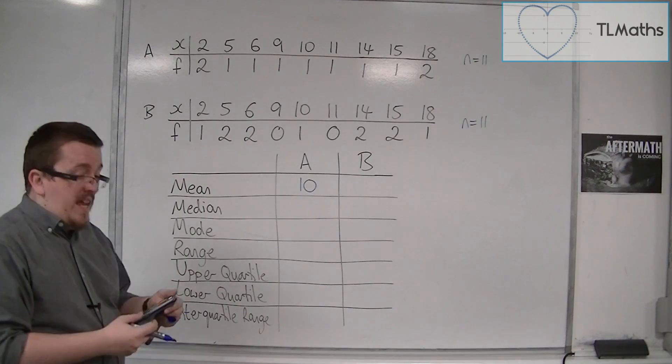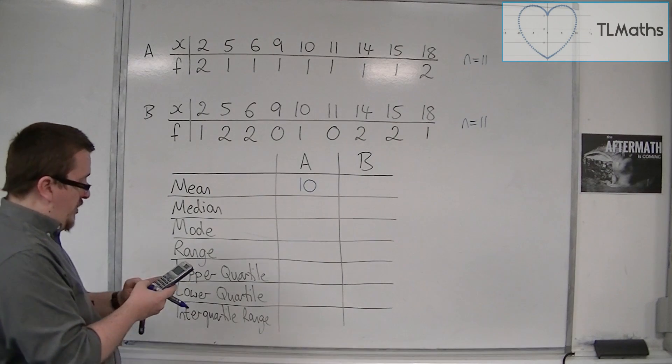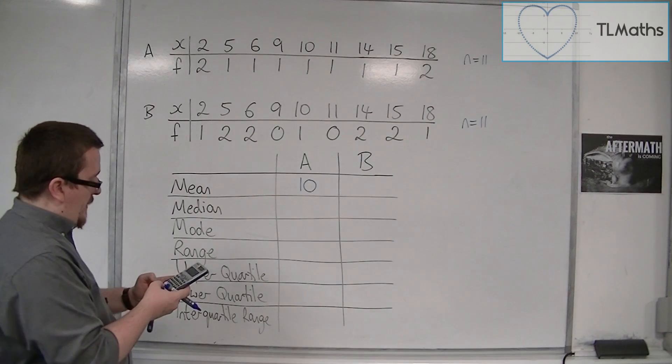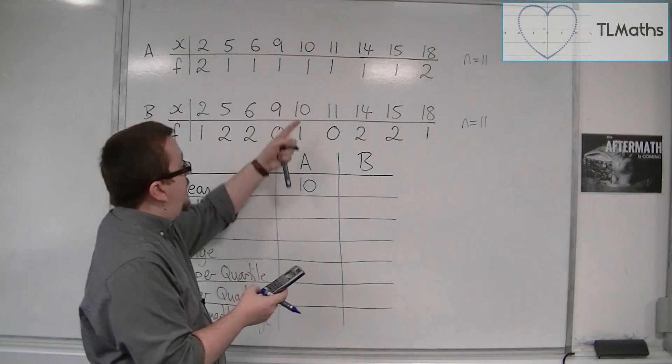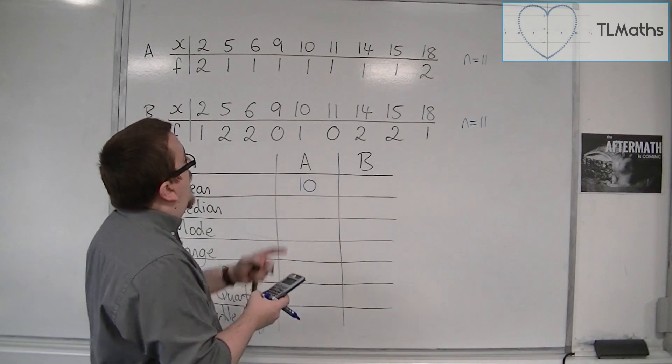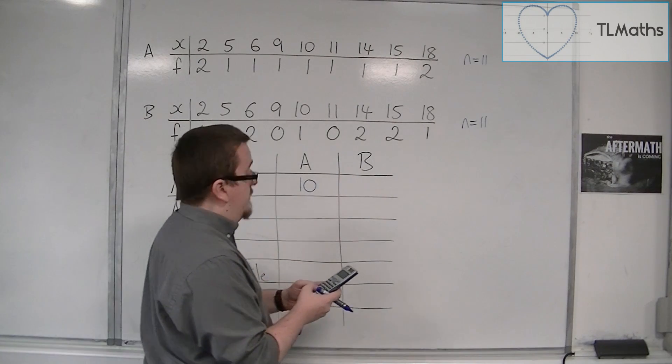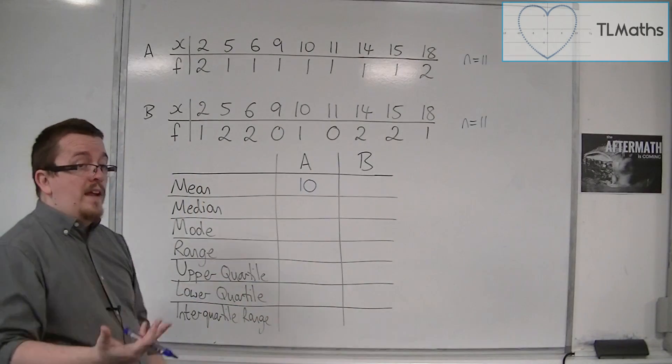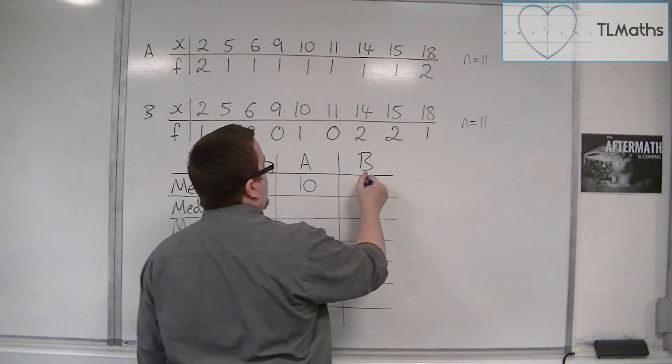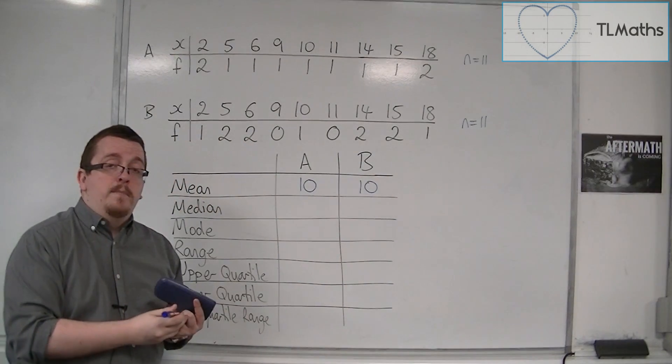Let's try it for B. So we've got 1, 2 there. We've got two 5s, two 6s, a 10, two 14s, two 15s and an 18. And that adds up to 110 as well, divided by 11 and gets us 10. So in actual fact, A and B both have the same mean.